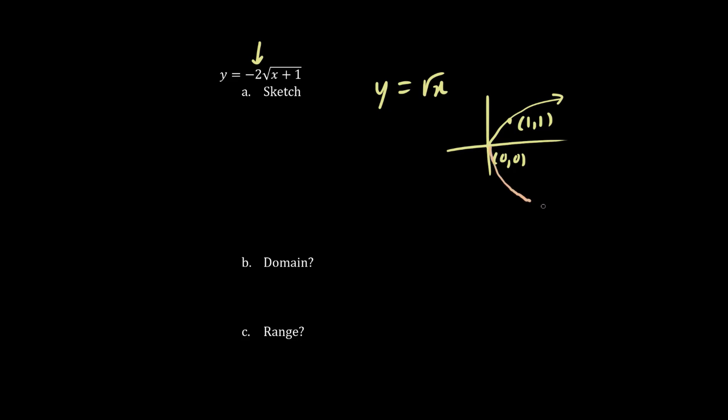So the graph goes below the x-axis and instead of (1,1), we have (1,-2) because we multiply 1 by negative 2. Furthermore, we shift the graph one unit to the left.